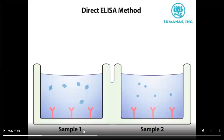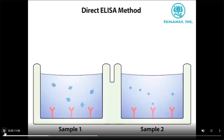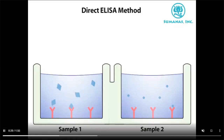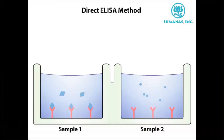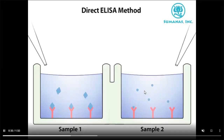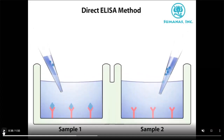The patient sample is added in both cases. When we add the patient sample, the antigen will go and bind with the specific antibody. In the other patient serum, if you don't find antigens, there is no binding. So antigen-antibody complex is found in patient 1, but not in patient 2.